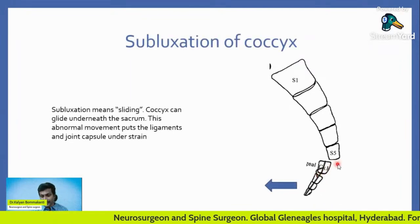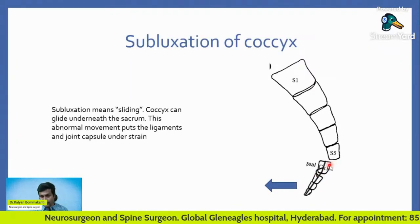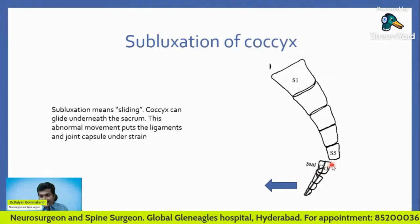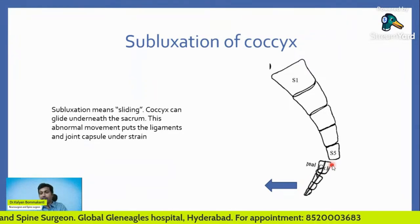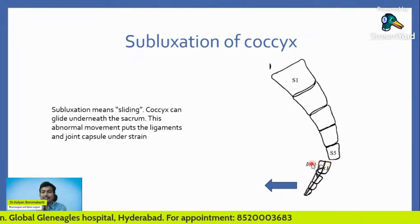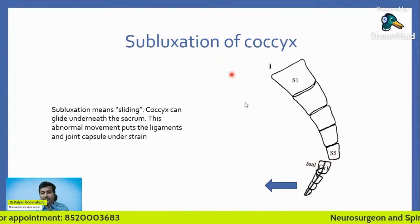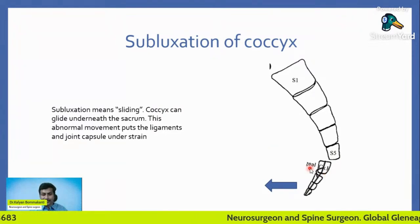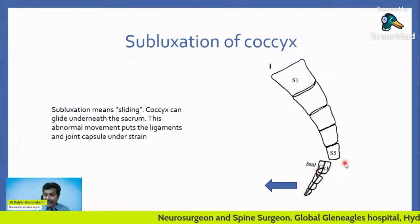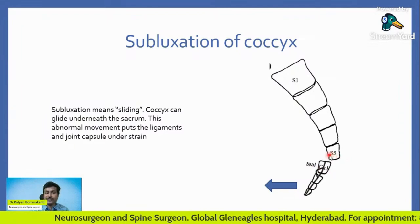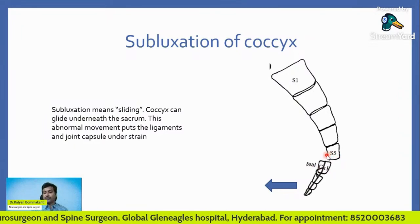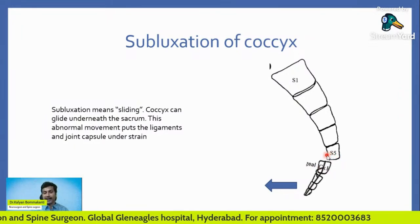Observe this. Here, in addition to forward movement, there is gliding or slipping of the coccyx below the sacrum. This sliding is also known as subluxation. This sliding causes abnormal strain on the ligaments and, in addition, it causes abnormal strain on the sacro-coccygeal joint. This causes pain while sitting.